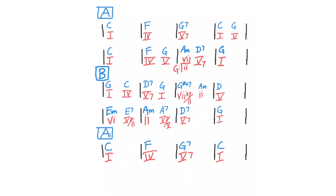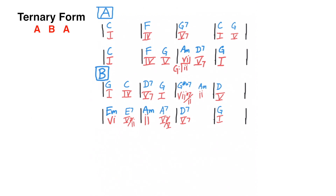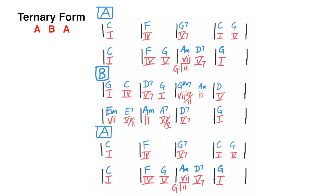Next, we will take this chord progression and rework it into ternary form. Ternary form is A, B, A. So I will start by getting rid of the A' section at the end, then copy the A section and paste it at the end. The only issue with this second A section is that it ends in the key of G, so I need to rework it so that it ends in the key of C. As I review the last three chords of my progression, I notice that I go to the sixth chord. From the sixth chord in the key of C, I could easily go to the five chord in the key of C, which would give me G7, and from there I could return to one, giving me an authentic cadence. Now we've reworked this chord progression into a ternary form that begins and ends in the key of C. Let's hear what this sounds like.